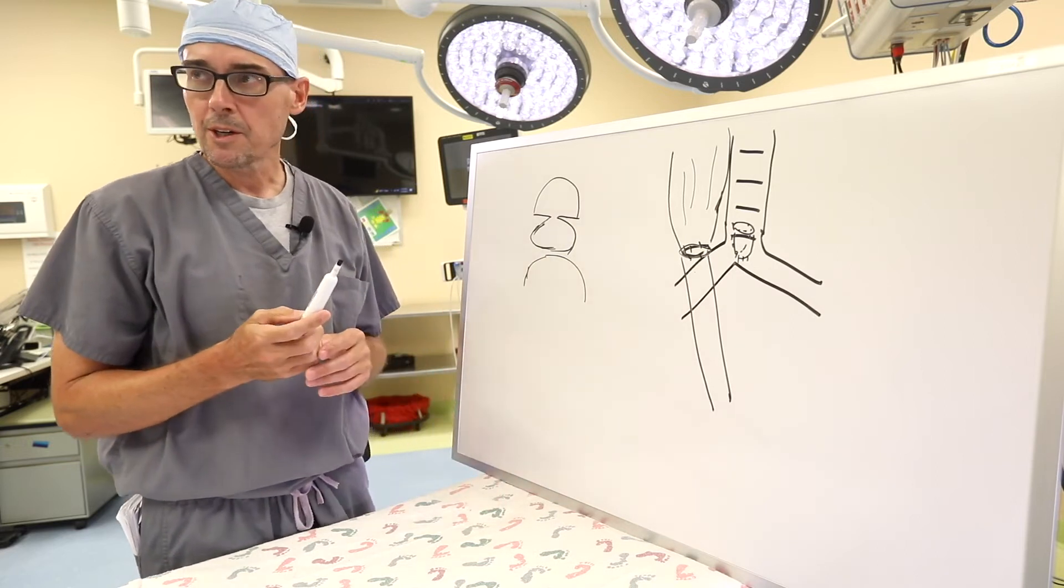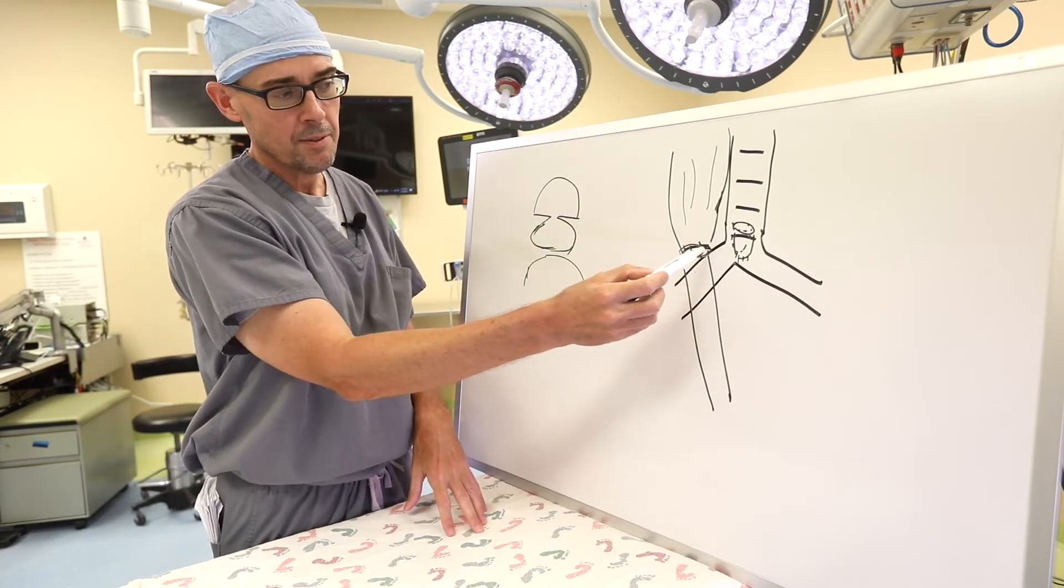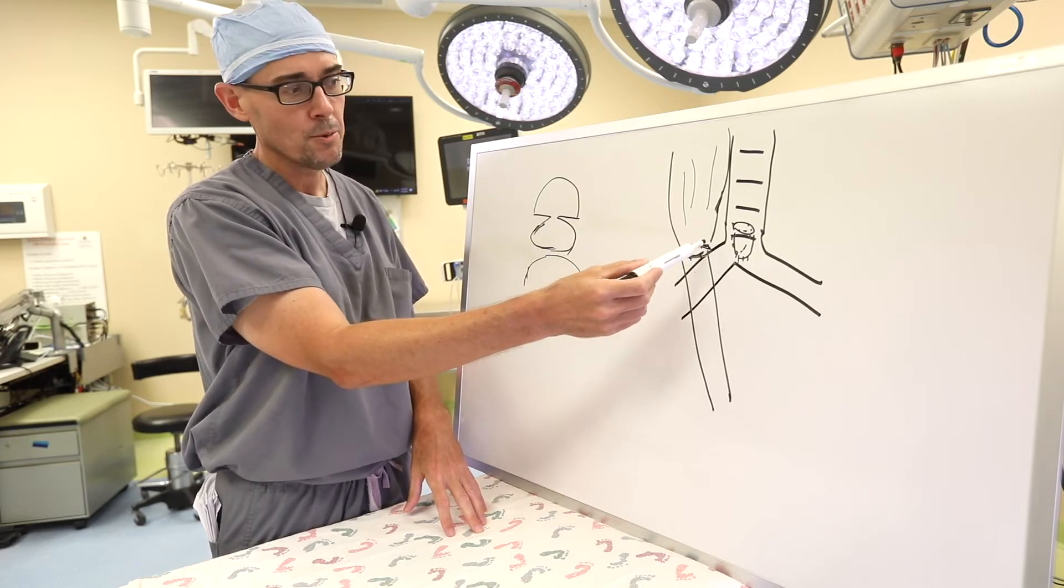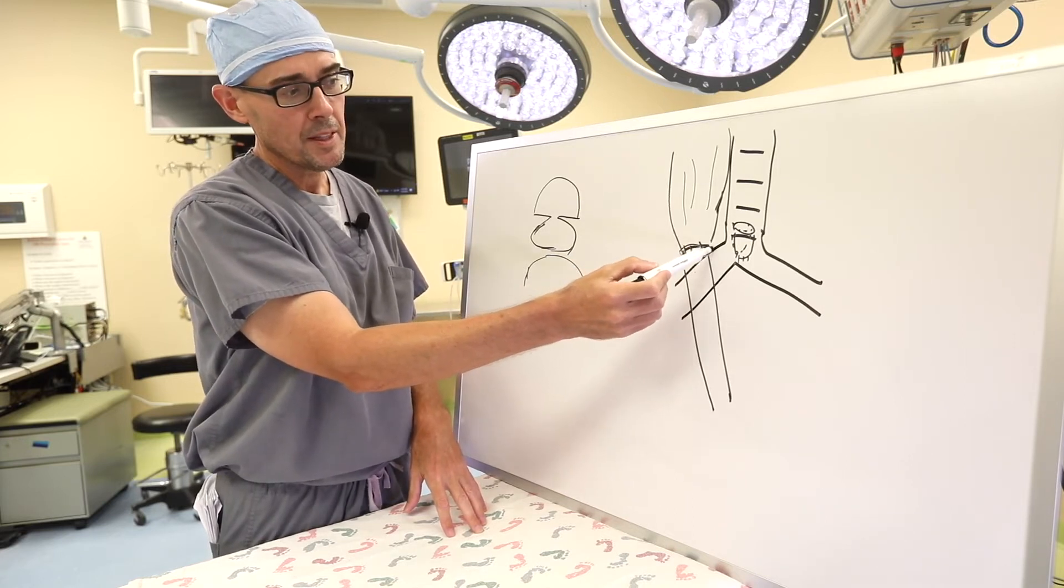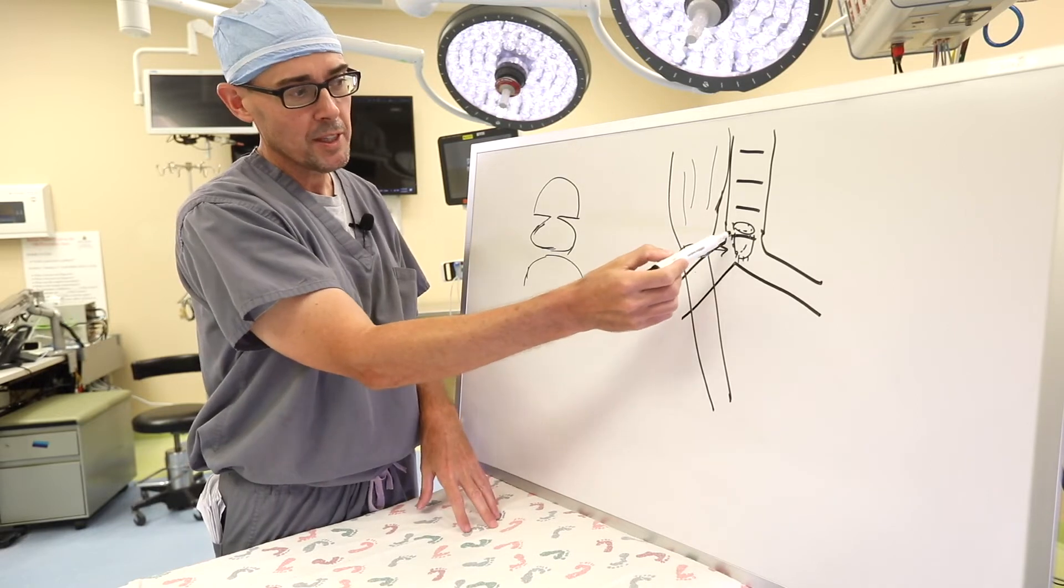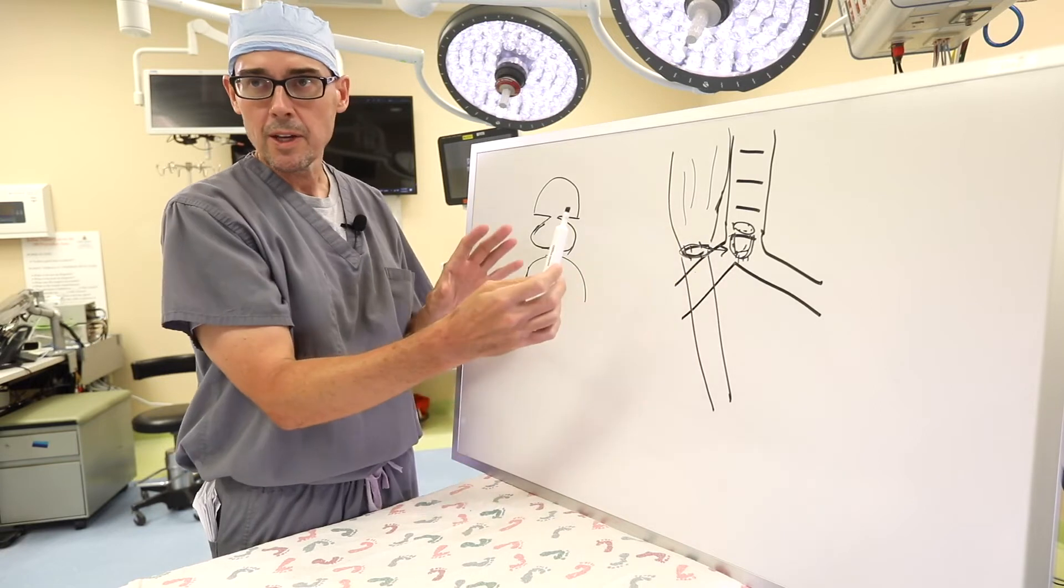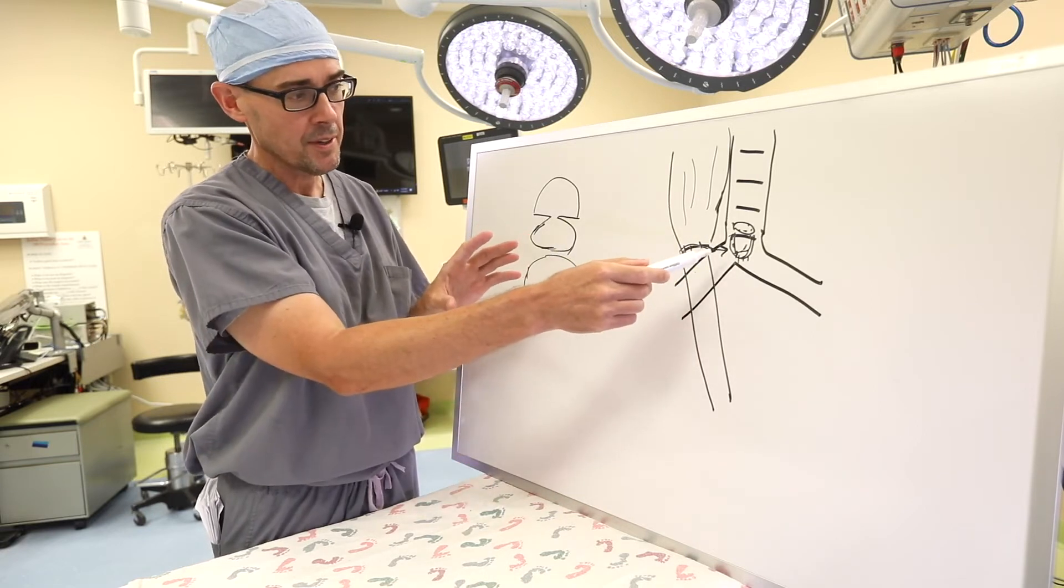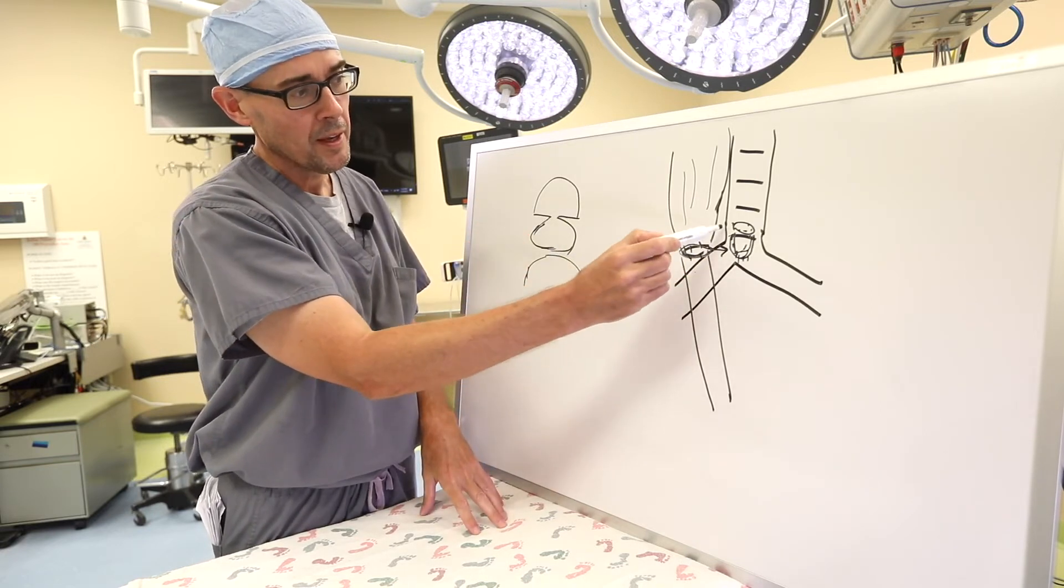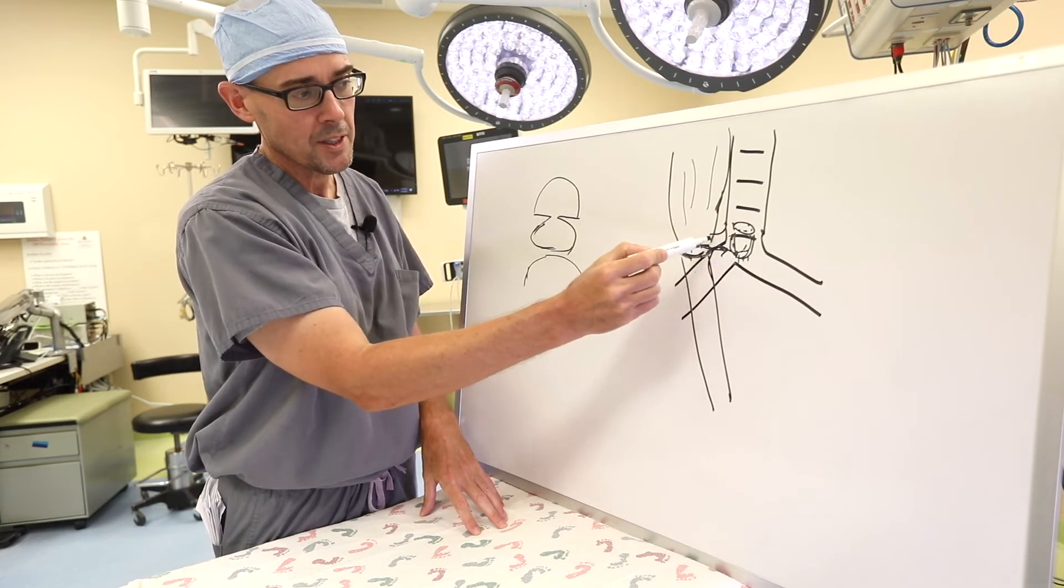When you get a recurrent TEF, what has happened is this esophageal connection didn't heal well and you get a leak and that leak can cause inflammation into the closure of the TEF. And so you end up with a connection of the esophagus and trachea again. And so now it would be a side connection like this.